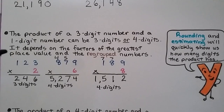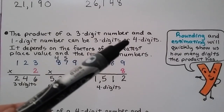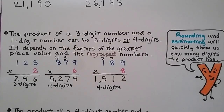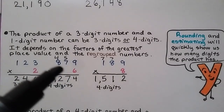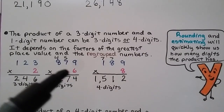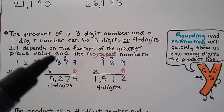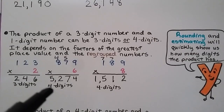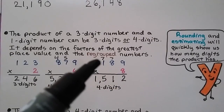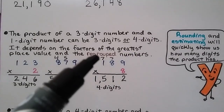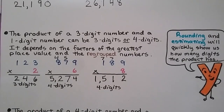The product of a 3-digit number and a 1-digit number can be 3 digits or 4 digits — it depends on the factors of the greatest place value and the regrouped numbers. For example, 2 times 100 gives us around 200, so 3 digits. But 6 times 8 in the hundreds gives 48, and because of regrouped numbers, that puts us into 4 digits. Similarly, 8 times 100 might seem like 800-something, but regrouped numbers added to it can push us into the thousands for 4 digits.